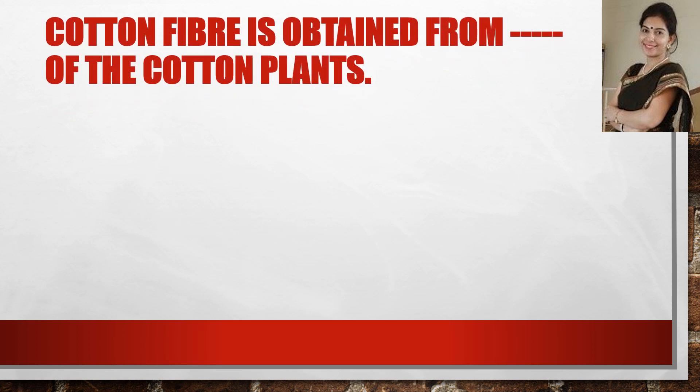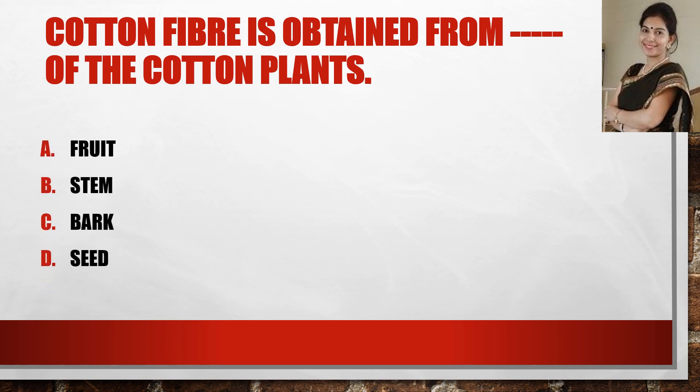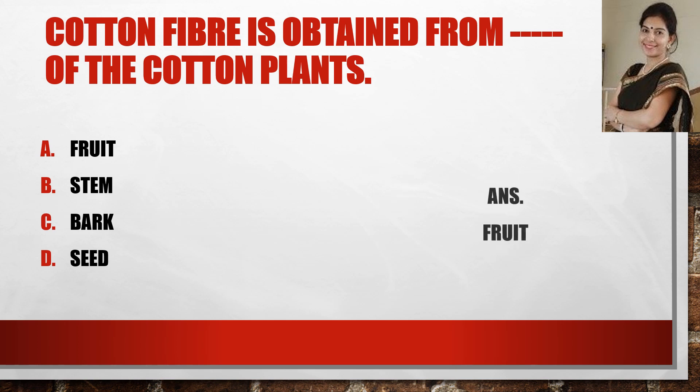Now the next question: cotton fiber is obtained from the dash of the cotton plant. You have 5 seconds. The answer is fruit.